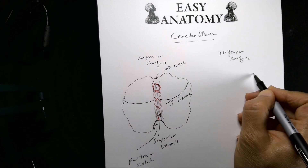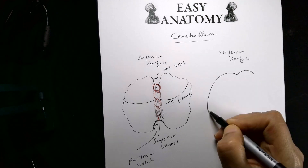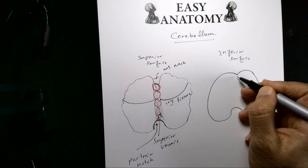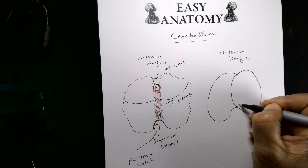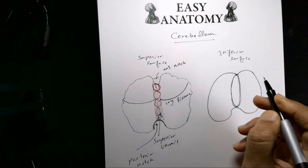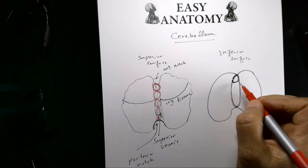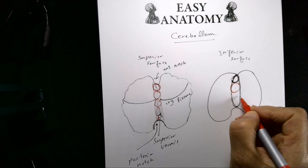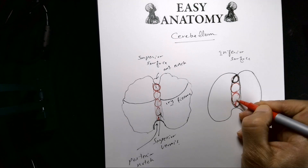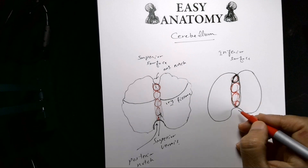On the inferior surface, you again have an anterior notch and a posterior notch. You will notice there is a deep depression here, and the vermis is more prominent. The inferior vermis has several parts starting from the nodule, then uvula, pyramid, and so on.